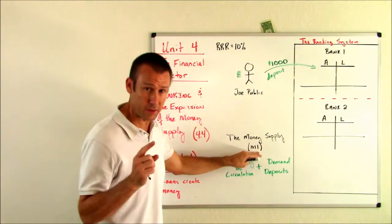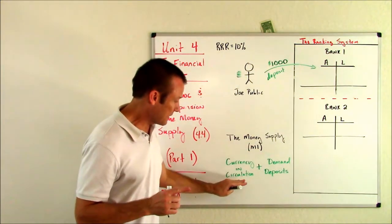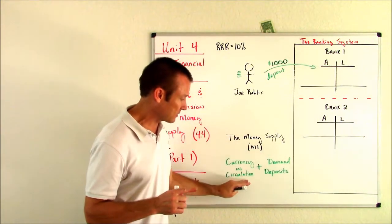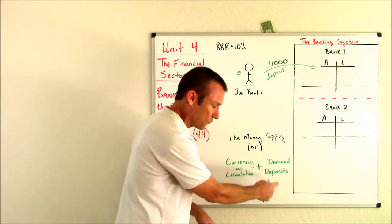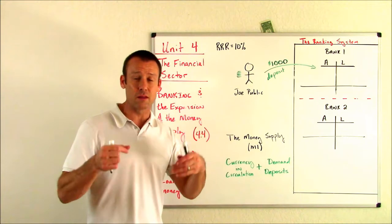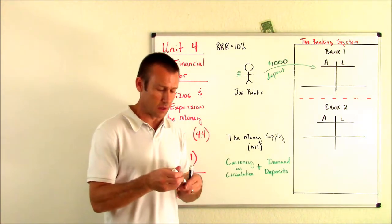M1, that aggregate measurement of the money supply, includes currency in circulation and demand deposits. So we're going to want to keep our eye on both of these to see when the money supply actually expands and when it doesn't.